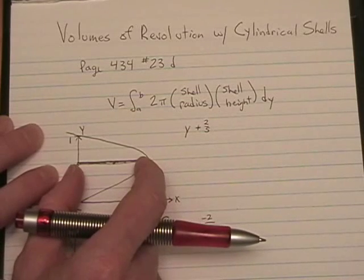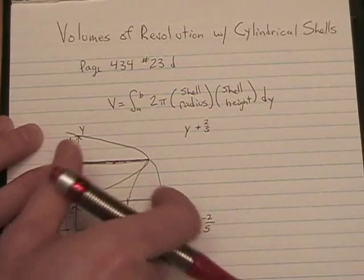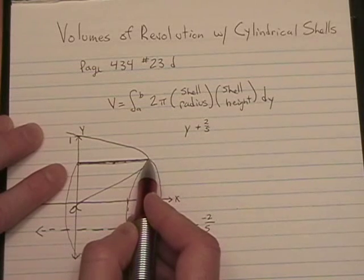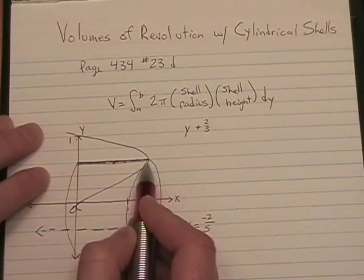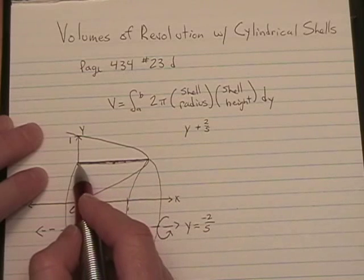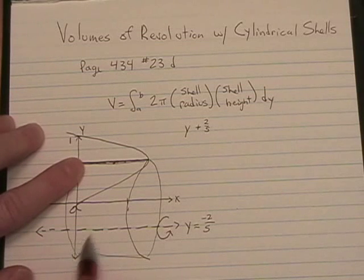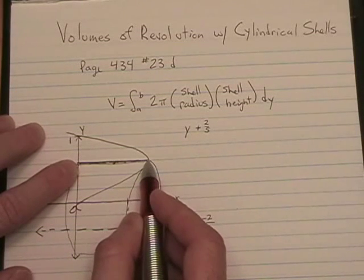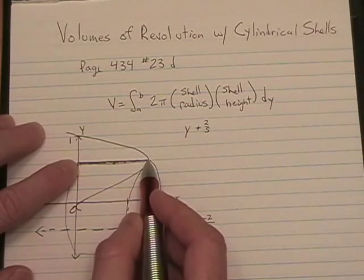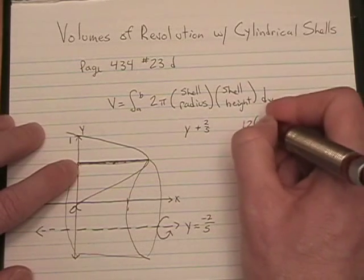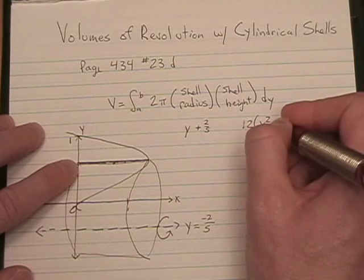To get the shell height, which is actually a width since our cylinders turn sideways, we simply do the right-hand boundary minus the left-hand boundary. In this case, we're lucky. The left-hand boundary is x equals 0. So, our right-hand boundary is the function, which happens to be 12 times y squared minus y cubed.